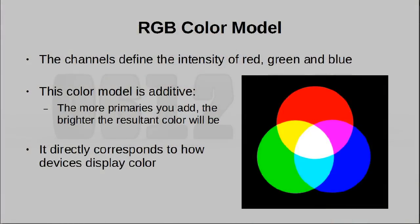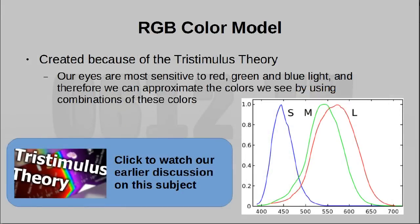Let's jump right into the very first one — RGB. This is the one we've most commonly seen, and it describes color using three values: red, green, and blue. RGB is an additive color model, meaning we take individual primary colors and mix them by adding their intensities on top of each other to create the final color we want. The reason why RGB is used is because of the tristimulus theory — these are the colors of light that our eyes respond the most to, so this color model has been tailored to fit how our eyes see the world.